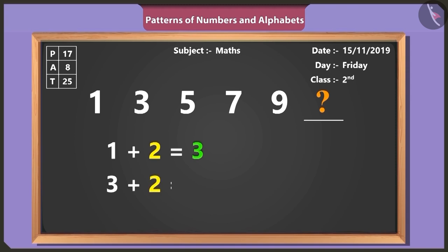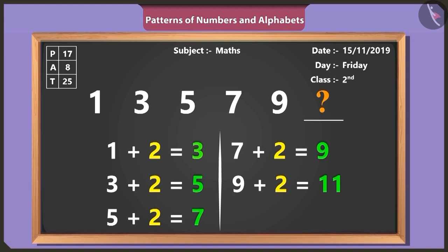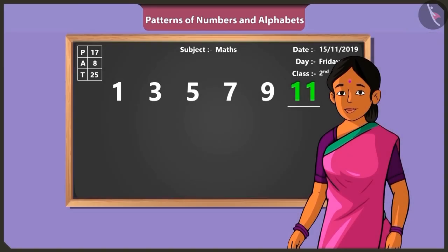Yes. Two added to three gives five. Two added to five gives seven. Two added to seven gives nine. And two added to nine result is eleven. Yes, therefore, eleven comes after nine in this pattern. Well done.